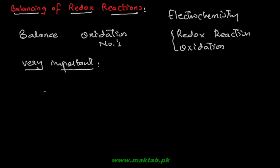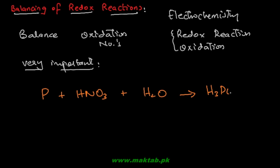I will take a simple example from your book: Phosphorus plus nitric acid (HNO3) plus water gives you Phosphoric acid (H3PO4) — technically orthophosphoric acid — and nitric oxide (NO). It is very obvious that things are not balanced on the left hand side and on the right hand side.